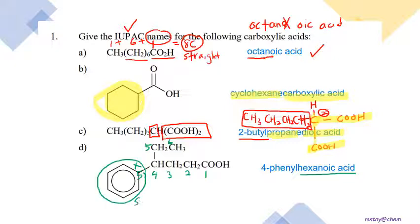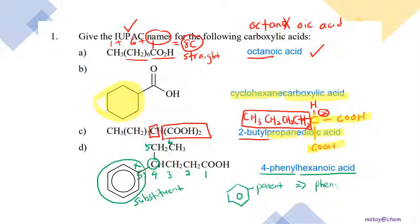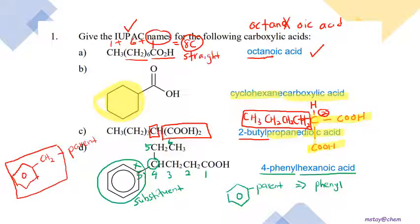The benzene ring becomes a substituent called phenyl, attached at carbon four — so it is 4-phenylhexanoic acid. Just to recall: when a benzene ring is attached directly to the parent chain, it is called phenyl. But when benzene is connected via a CH₂ group before attaching to the parent, it is called benzyl. Phenyl and benzyl are different.